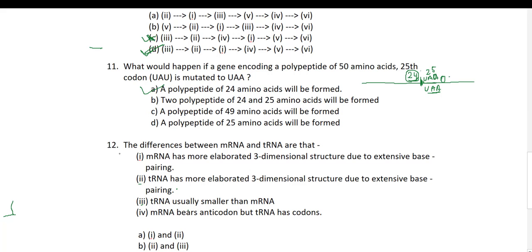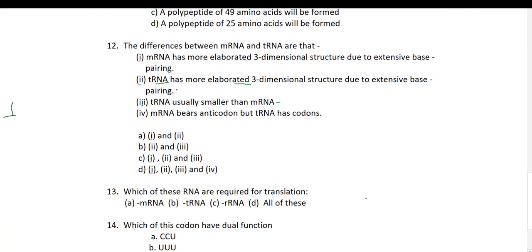Twelfth question: the differences between mRNA and tRNA. Option: mRNA has a more elaborate 3D structure due to extensive base pairing — no, mRNA is not in a 3D structure. tRNA has a more elaborate 3D structure due to extensive base pairing — yes, tRNA is a 3D structure. tRNA is usually smaller than mRNA — yes, this is also correct. So the second and third options are correct, making option B the correct answer.